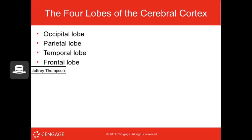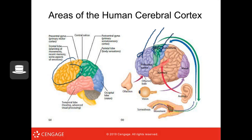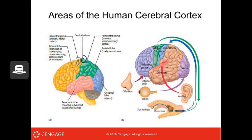There are four lobes of the cerebral cortex: occipital, parietal, temporal, and frontal. The frontal lobe includes the prefrontal cortex and the motor and somatosensory cortex. The precentral gyrus is where the primary motor cortex is, and the postcentral gyrus — just past the central sulcus — is the primary somatosensory cortex in the parietal lobe. The occipital lobe in the back is for vision; the temporal lobe on the side is for hearing and some visual processing.